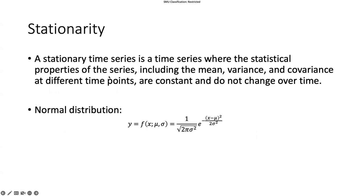Let's talk more about stationarity. A stationary time series is a time series where all the statistical properties including the mean, variance, and covariance at different time points remain constant and do not change over time. So no matter which horizon I look at, we always have the same mean, the same variance, and covariance.